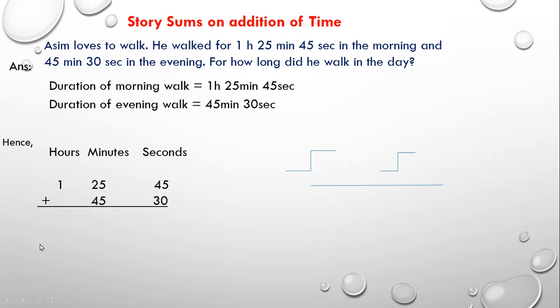After arranging in columns, I am going to add these units of time from lower units to higher units. 45 plus 30 seconds equals 75 seconds. 25 plus 45 minutes equals 70 minutes. And this 1 hour.